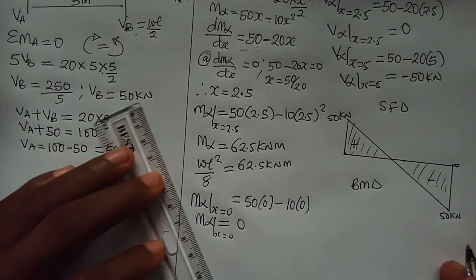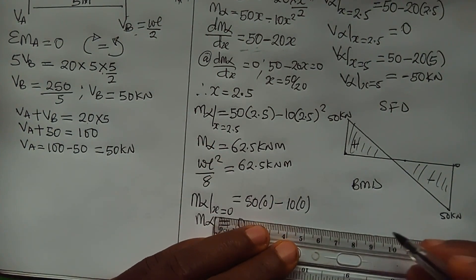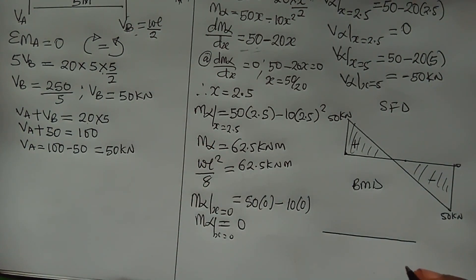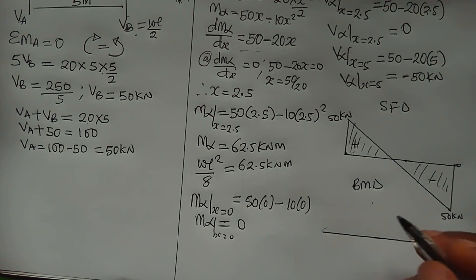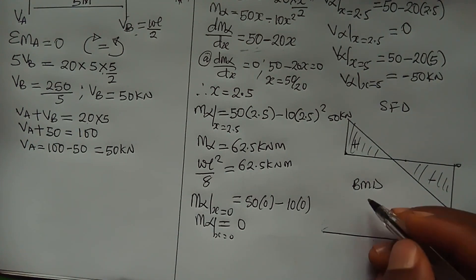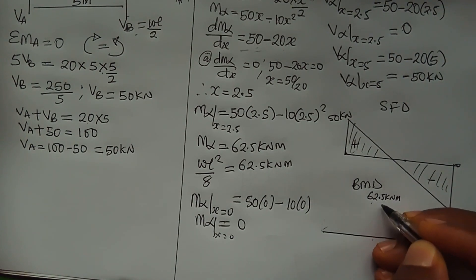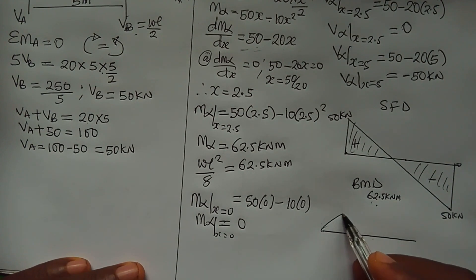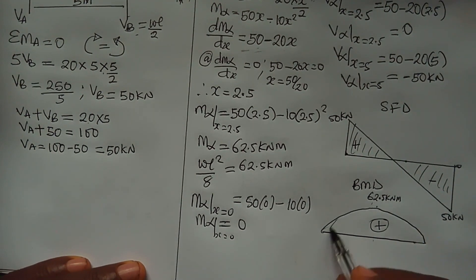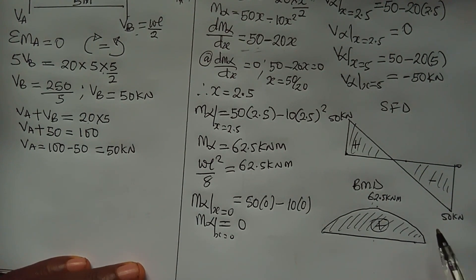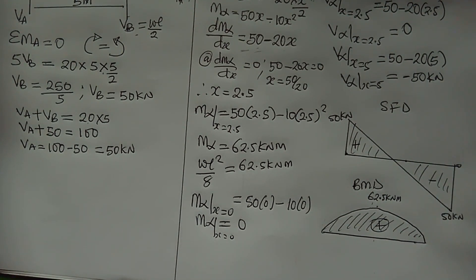For the bending moment diagram, draw the horizontal baseline. Because we have a UDL, the curve is parabolic — like a semicircle — unlike a point load which gives a triangle. We locate the maximum at x equals 2.5, which is 62.5 kilonewton-meters. That is all about the shear force and bending moment diagram. If you found this video helpful, please click the subscribe button and turn on the notification so you will be notified whenever we drop a video.